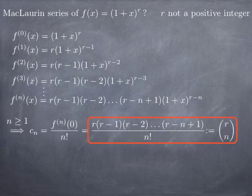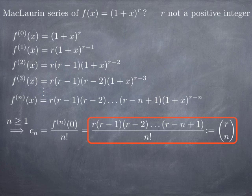We're going to give a special name and notation to this quantity, writing it as C(r, n) — r and n in a column between parentheses. In the case where r is a positive integer greater than or equal to n, this would be the number of ways to pick a subset with n elements out of r elements — that is, the combinations of r things taken n at a time. Here r is not a positive integer, but we will still call these things binomial coefficients or combinations, as a slight abuse of language.